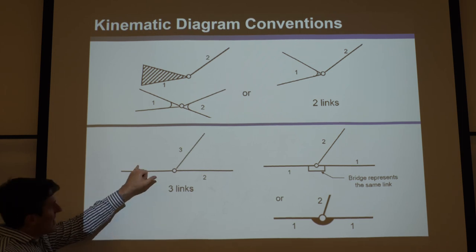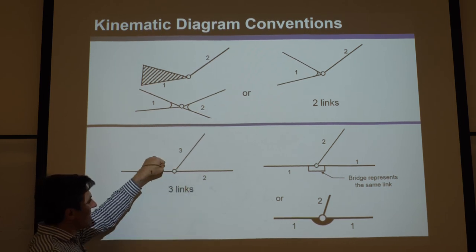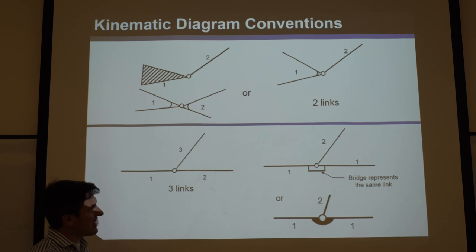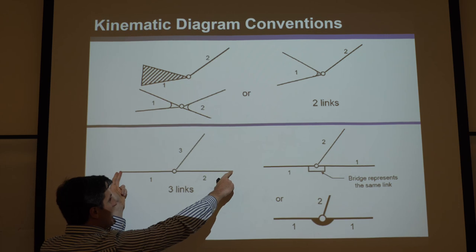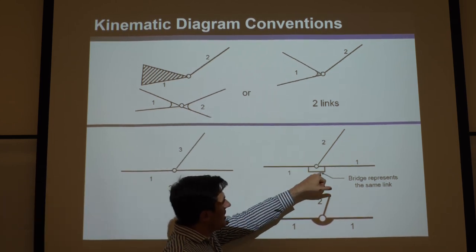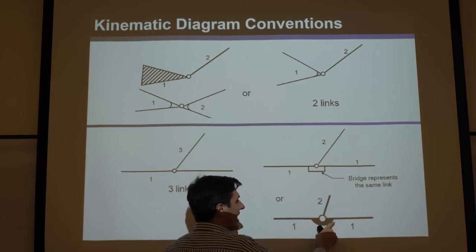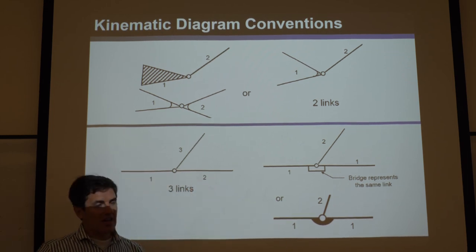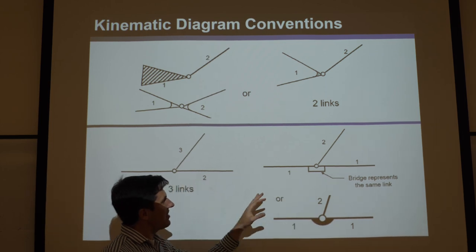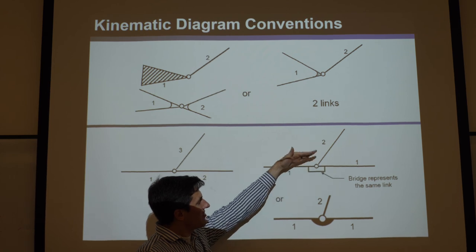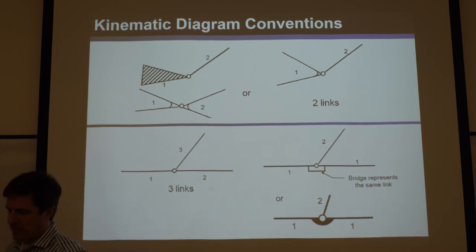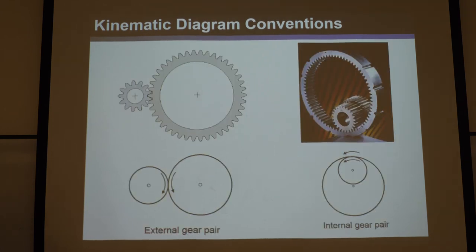For three links: a line with a circle and another line represents three independent links that can rotate around a revolute joint, labeled one, two, three. But if you need to draw a single continuous rigid bar with a revolute joint in the middle, you draw a square or half circle as a bridge to show those two seeming independent lines are actually one link. With the bridge, there are two links; without it, three.